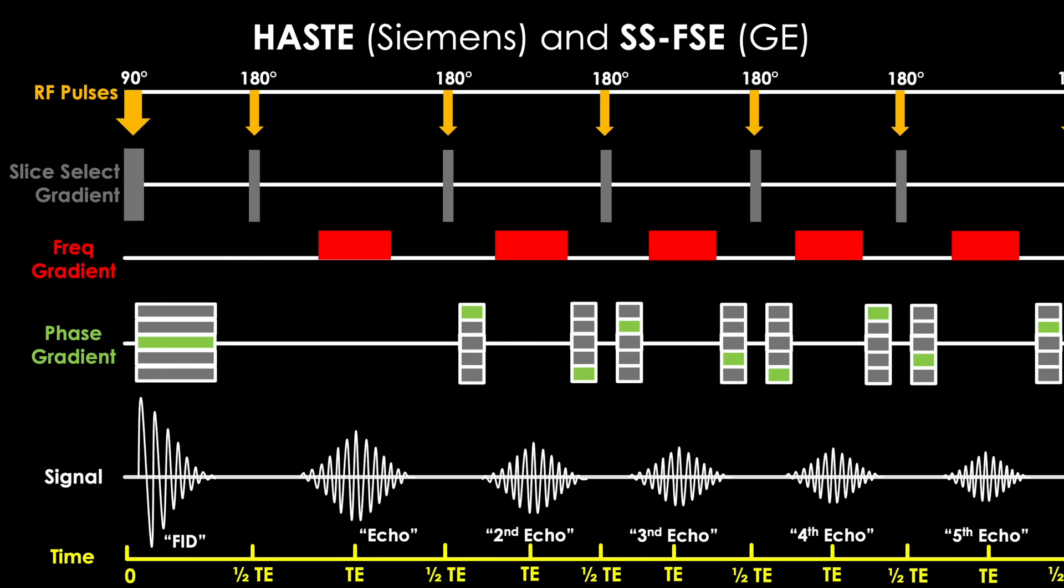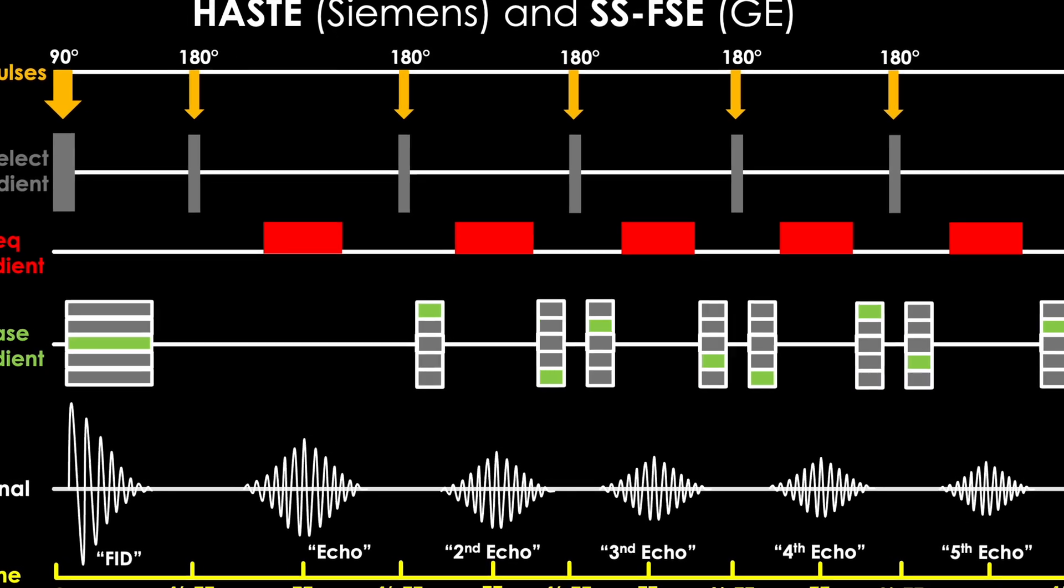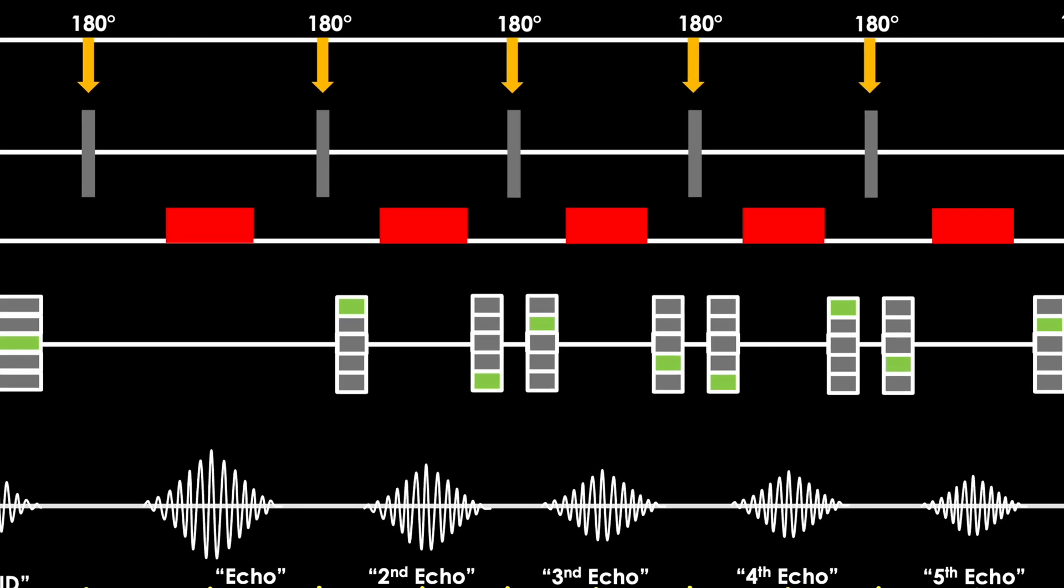Part of it made sense, repeating these 180 degree rephasing pulses at one half TE to produce a trail of echoes just like in our turbo slash fast spin echo sequences. But we did something really bizarre with our phase encoding gradients in order to keep the echoes from dying out like they normally would. So what's going on here? Maybe a better question to ask is, how does this phase encoding gradient affect our signal?